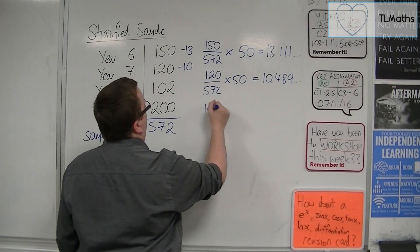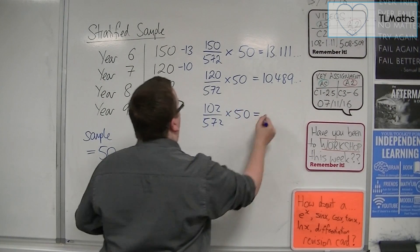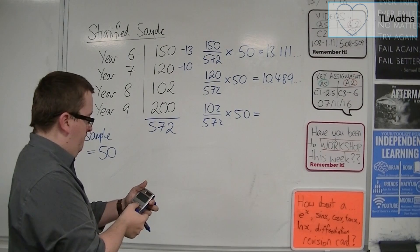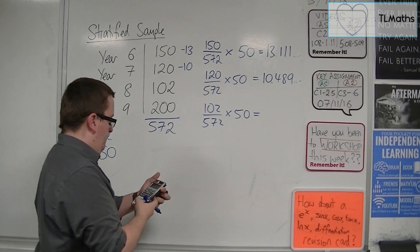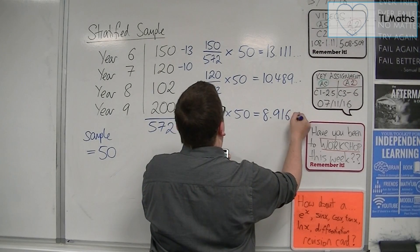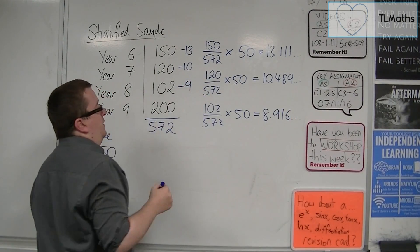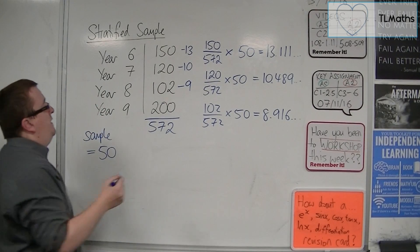For year 8, 102 out of 572 times by 50. And that gets me 8.916. So I'd round that up to 9 to the nearest student.